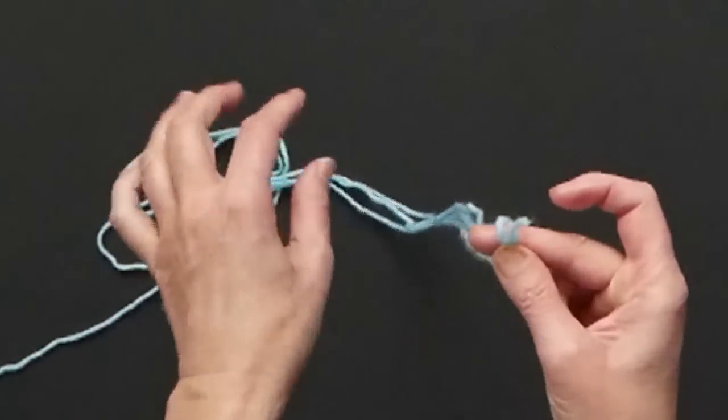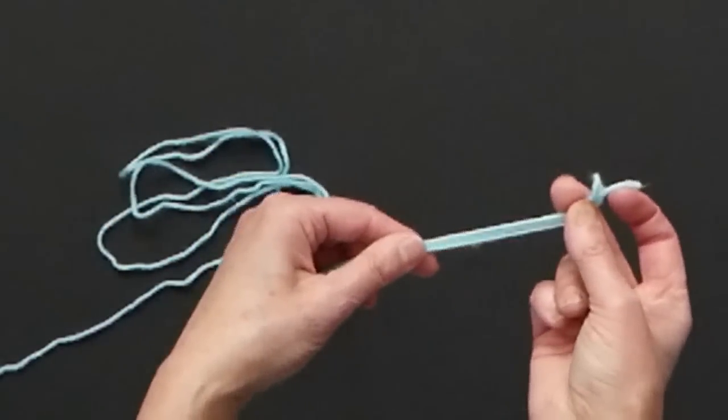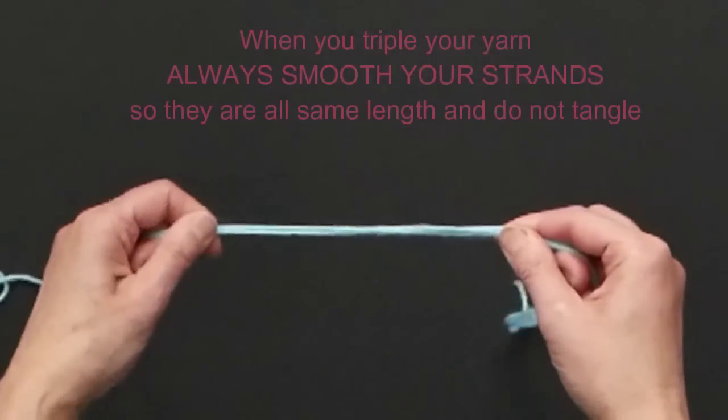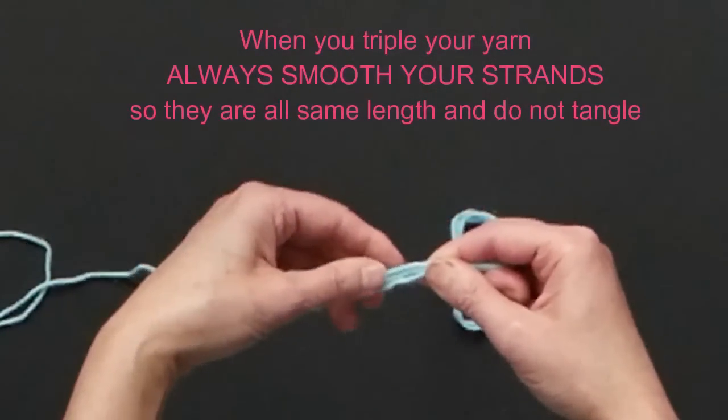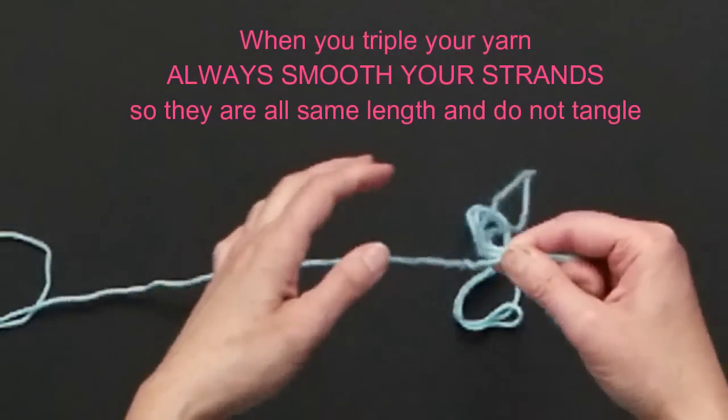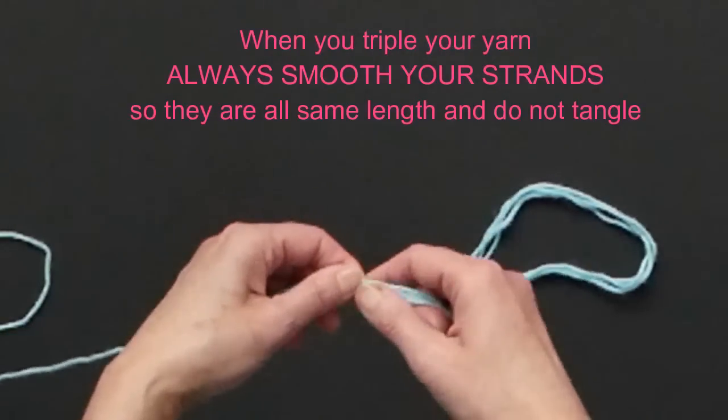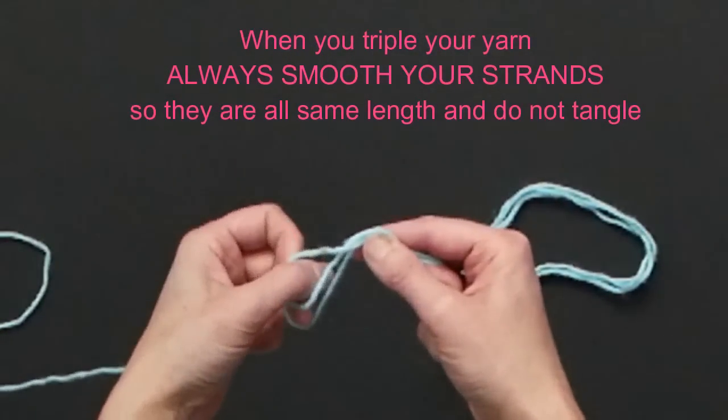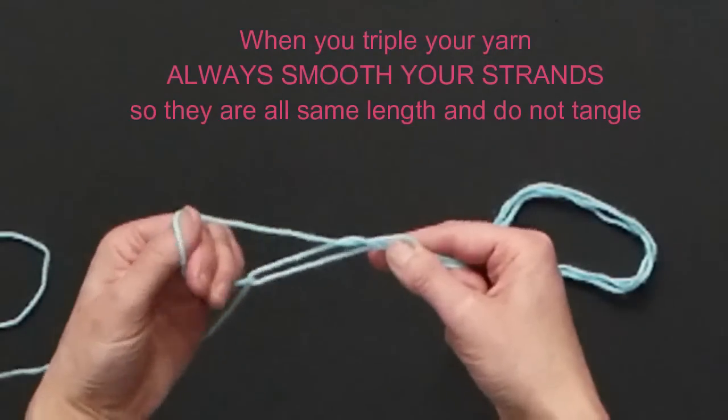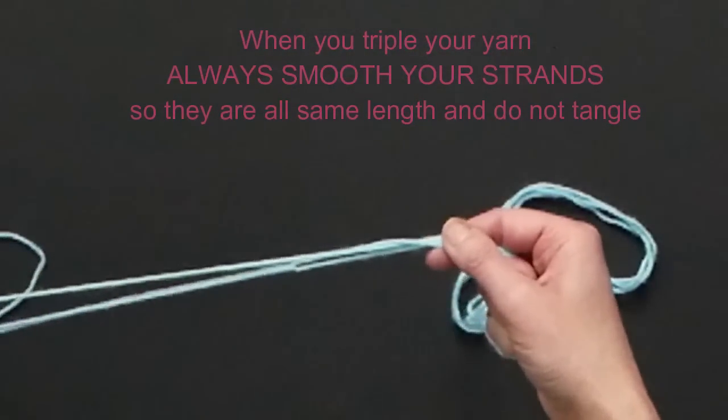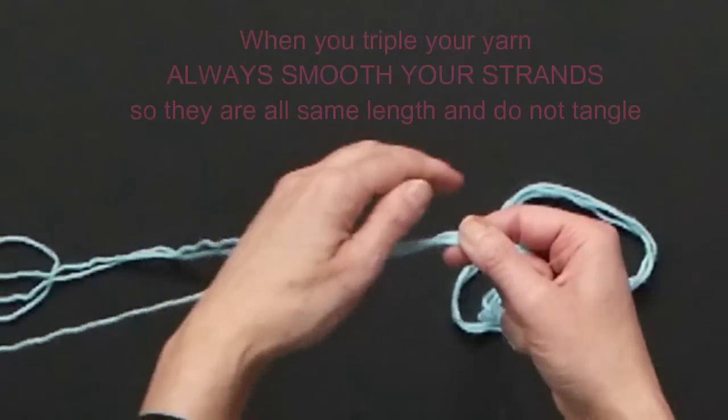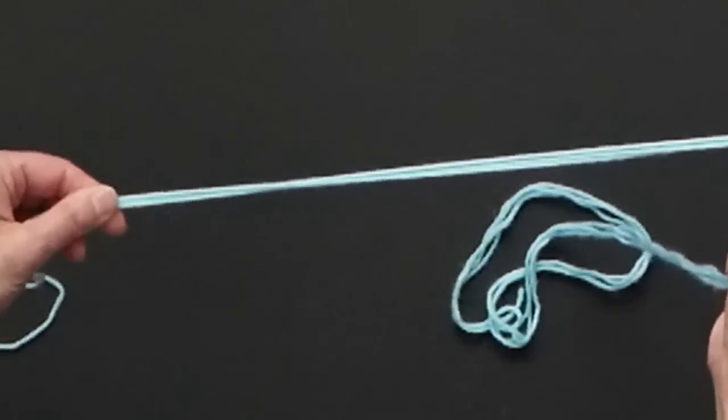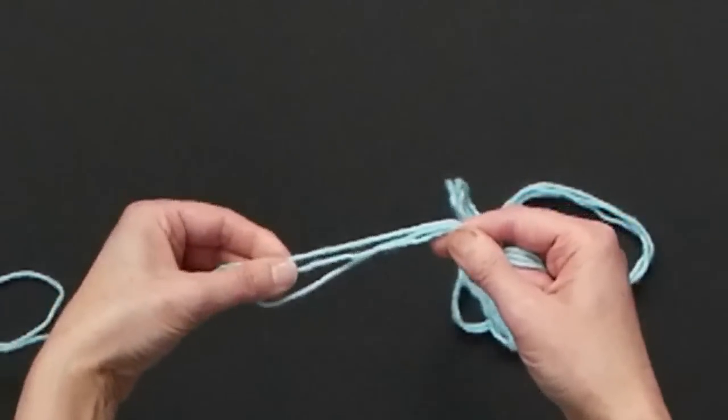Here you see the beginning of your thick yarn. I always smooth my strands so it's easier to work with when it's smooth, and then you can still continue making more loops. You can create really long strands of tripled yarn if you want.